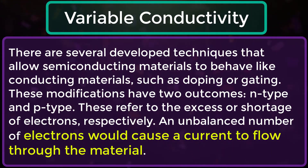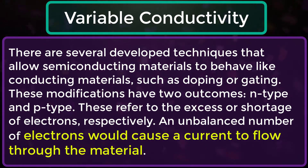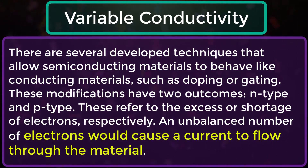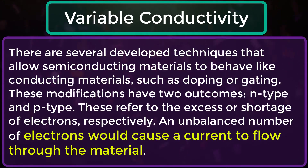These modifications have two outcomes: N-type and P-type. These refer to the excess or shortage of electrons respectively. An unbalanced number of electrons would cause a current to flow through the material.